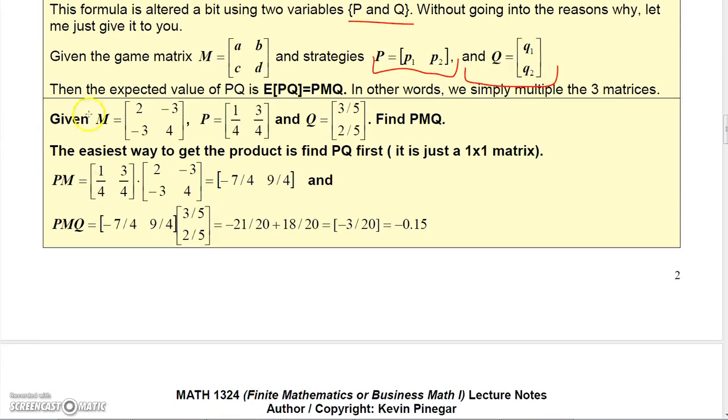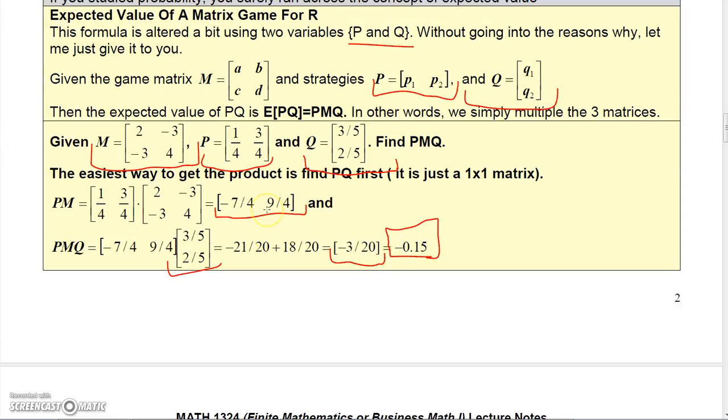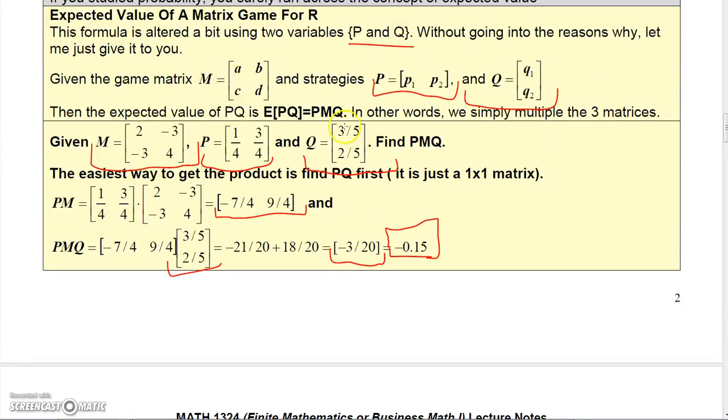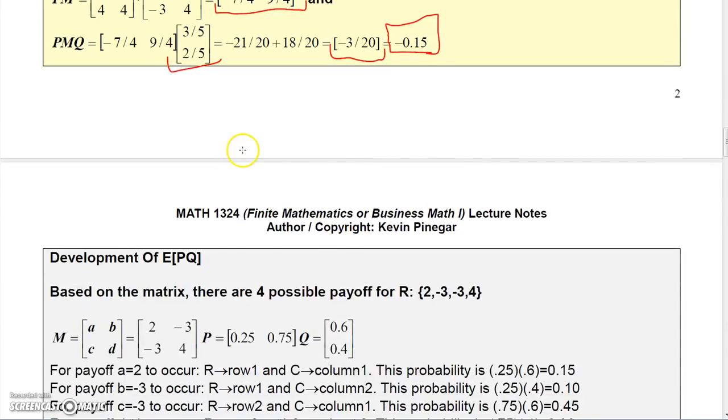Let me show you how that would work. Let's say that this was our game matrix, and these are the probabilities for R, and these are the probabilities for C. Now if we multiply these three together, if you multiply P times M, you would get negative 7 fourths times 9 fourths. And then if you multiply that by Q, you get negative 21 over 20 plus 18 over 20, which is negative 3 twentieths, which is negative 0.15. So the expected value of PQ would actually be negative 0.15. So that's how you find the expected value using a game matrix and the two strategies P and Q.